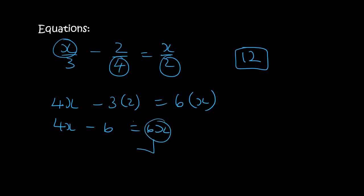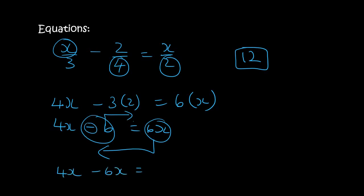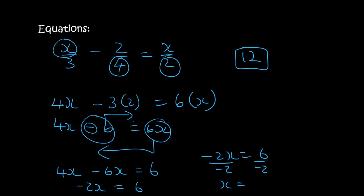Now it becomes a normal question. Take the x's to one side and the numbers to the other, giving 4x minus 6x equals positive 6. That's minus 2x equals 6. Divide both sides by minus 2, and x equals minus 3.